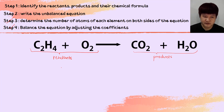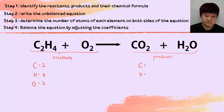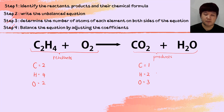Determine the number of atoms of each element on both sides. On the reactant side I have carbon, hydrogen, and oxygen. In C₂H₄ I have 2 carbon, 4 hydrogen, and in O₂ I have 2 oxygen. On the product side, in CO₂ + H₂O: carbon is 1, hydrogen is 2, and total oxygen is 3. So now we have the number of atoms of each element for both sides and need to balance by adjusting coefficients only.